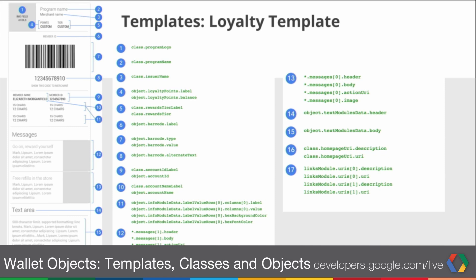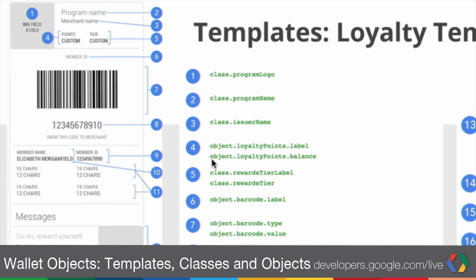We have a few templates available now, and we're working on releasing additional templates in the future. So to find the latest, be sure to check our documentation. In this specific template, we're defining the mapping between the JSON data and where it will be displayed. For example, the class program logo will be displayed in the top left.